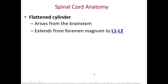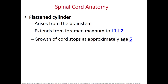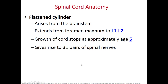Let's start looking at the anatomy. The spinal cord is a cylinder that comes from the brain stem. The most inferior part of your brain stem is the medulla. It goes through the foramen magnum of the occipital bone and only goes down to L1 and L2 — it doesn't extend all the way down to the sacrum or tailbone. The growth of your spinal cord stops around age 5, even though the vertebrae may continue growing.